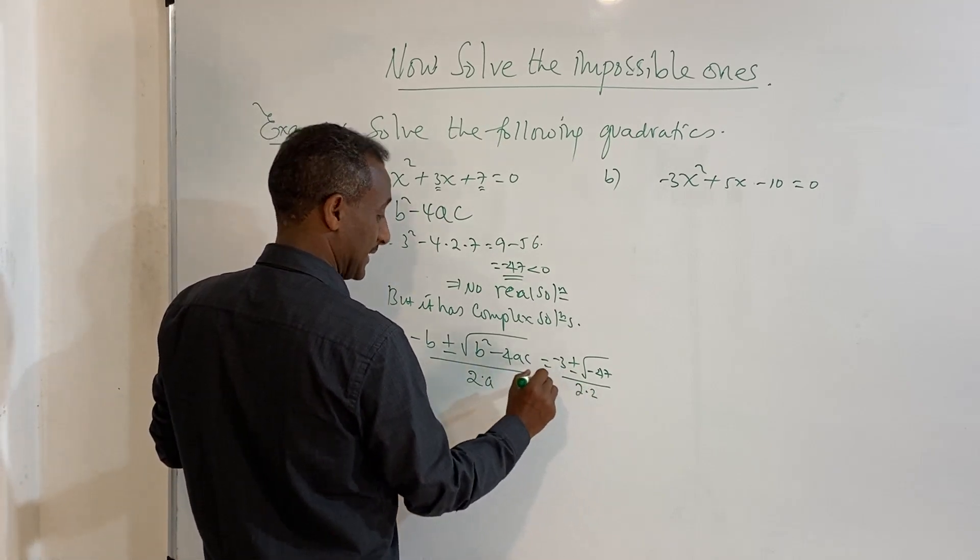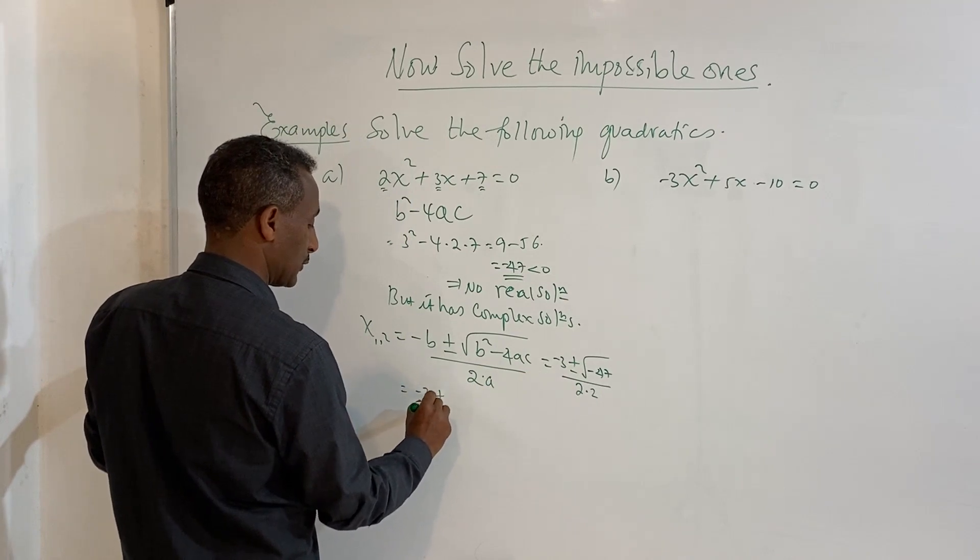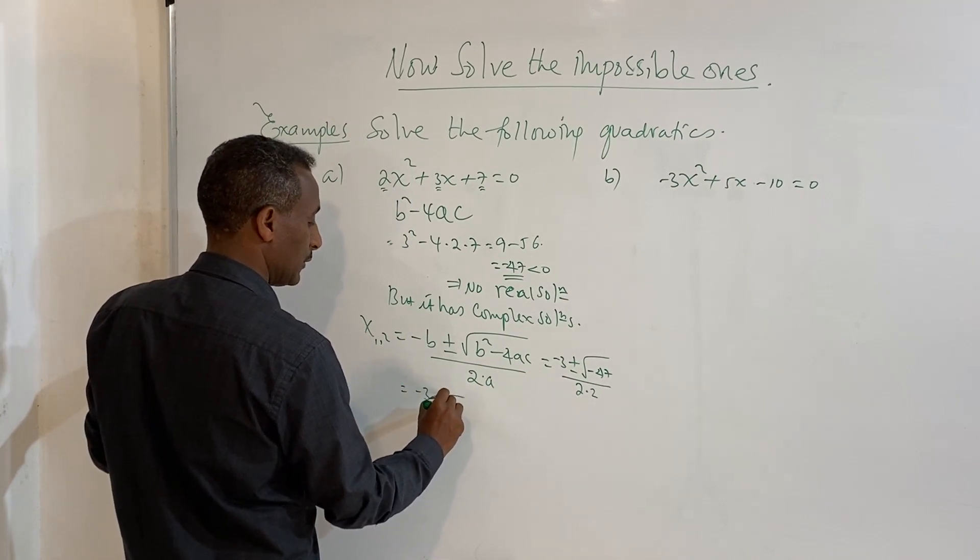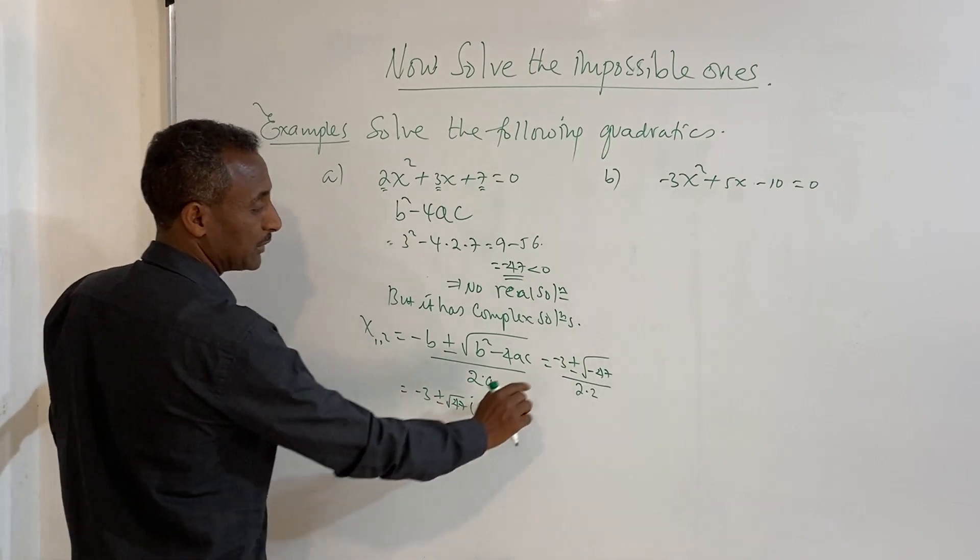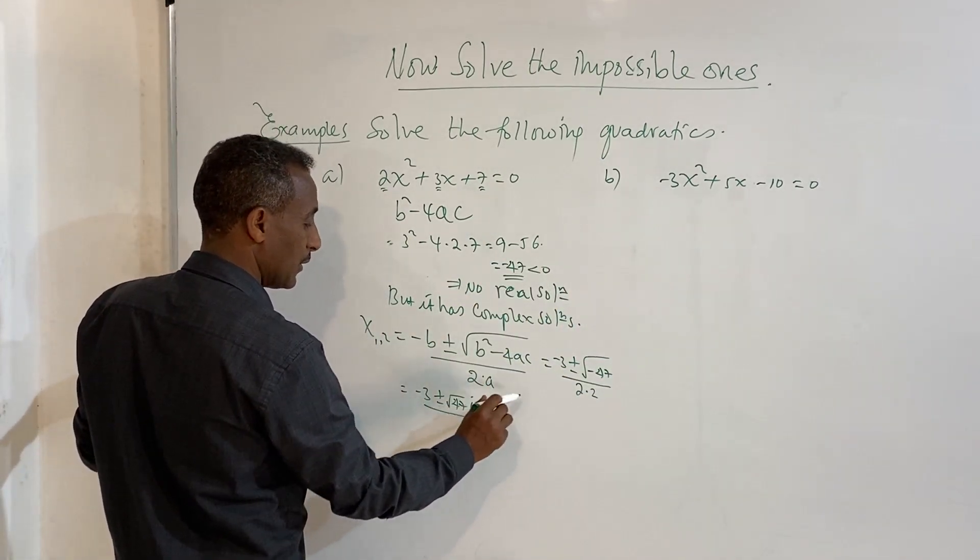This is the answer. Here we have minus b is minus 3, plus or minus square root of minus 47 over 2 times a is 2, which is 4.